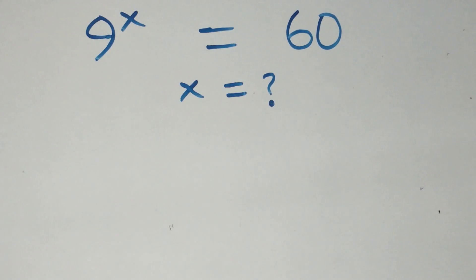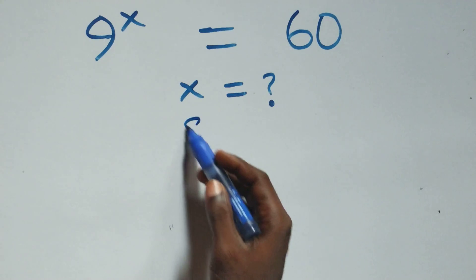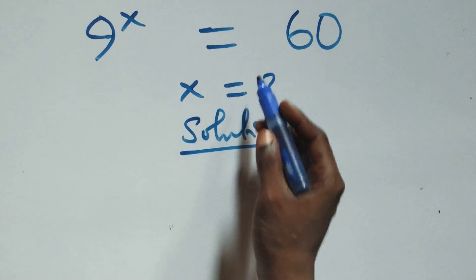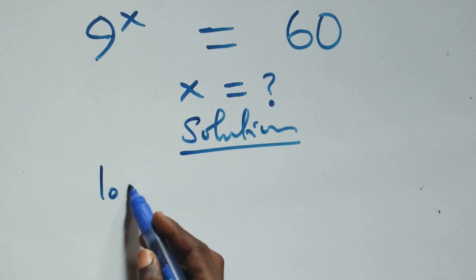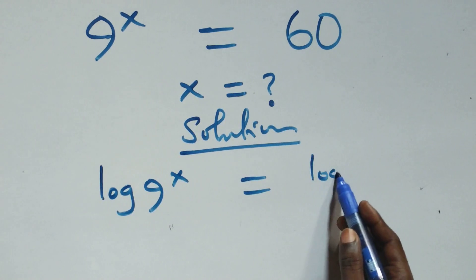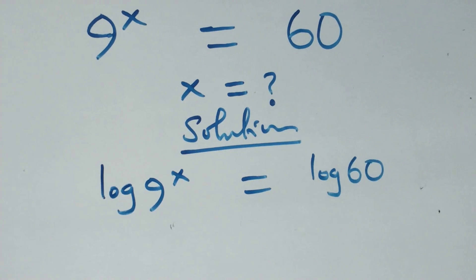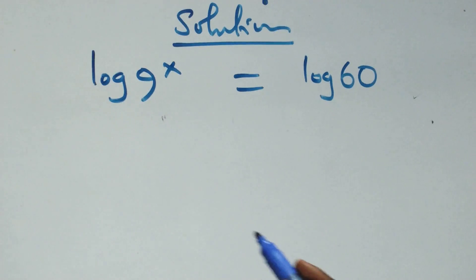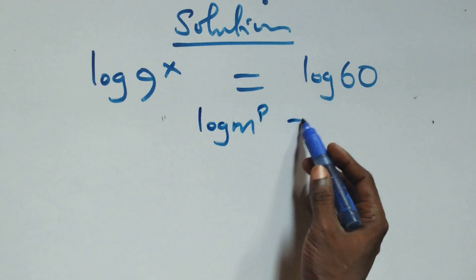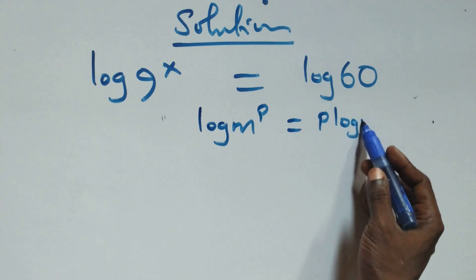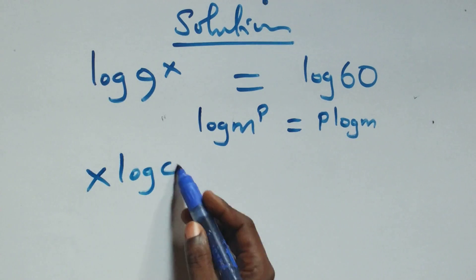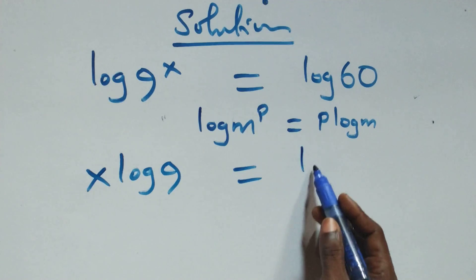Hello, you are welcome. How to solve this nice exponential equation — let's see what we have here. We take the log on both sides: log 9 raised to power x equals log 60. We apply the power of logarithm: log m raised to power p is the same as p log m. So this becomes x log 9 equals log 60.